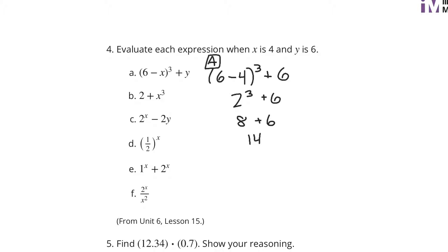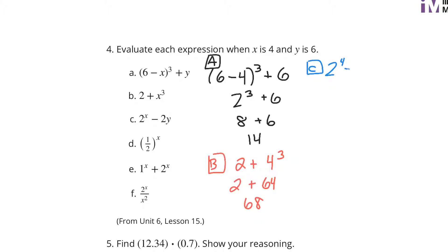For B: you get 2 plus 4 to the third. 4 to the third is 4 times 4 is 16, times 4 is 64. 2 plus 64 is 68. For C: you get 2 to the fourth minus 2 times 6. 2 to the fourth is 2 times 2 times 2 times 2, which is 16. Minus 2 times 6 is 12. You get 4.